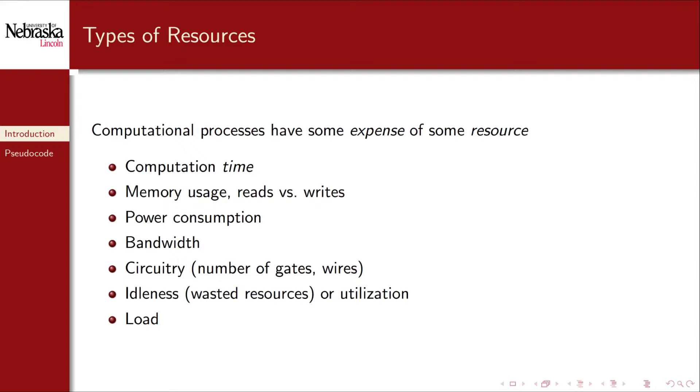You may even consider memory reads or writes independently as in some applications one is faster than the other. Another common resource measure is power consumption. In a lot of situations cell phones and other mobile devices for example we may be willing to sacrifice speed if we can decrease the amount of power required to execute a program. Most people would prefer a smartphone whose battery lasted twice as long versus one that had twice the processing power. Networking often uses bandwidth or throughput as its basic resource measure. Computation time may pale in comparison to the latency in a network connection. When considering embedded systems or low-level hardware resources can be measured in terms of the number of gates or wires that are required to implement a particular circuitry. This correlates nicely with power consumption and circuit size.